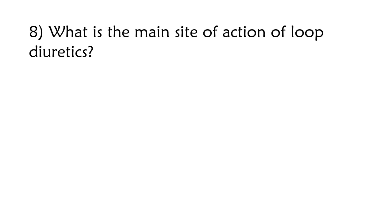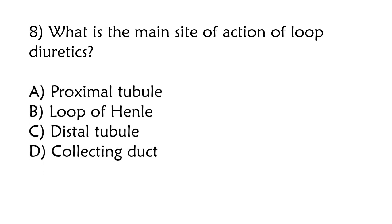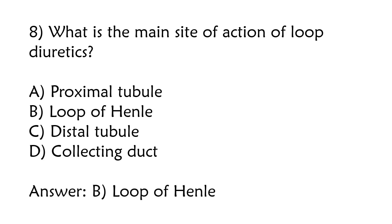What is the main site of action of loop diuretics? Proximal tubule, Loop of Henle, Distal tubule, Collecting duct. The correct answer is Option B: Loop of Henle.